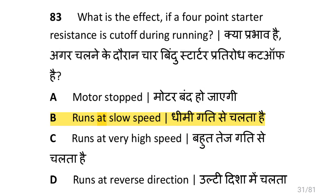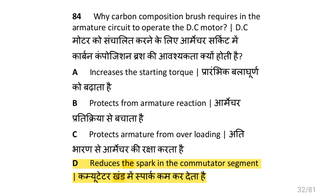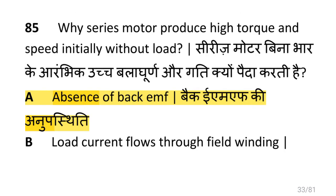What is the effect if a four point starter resistance is cut off during running? That is the motor runs at low speed. Why are carbon composition brushes required in the armature circuit to operate the DC motor? That is to reduce the sparking in the commutator segment. Why does a series motor produce high torque and speed initially without load? That is due to the absence of back EMF.